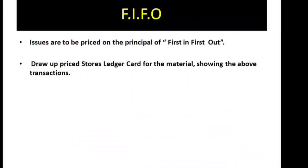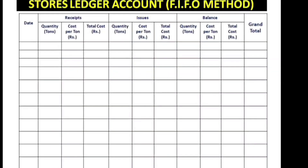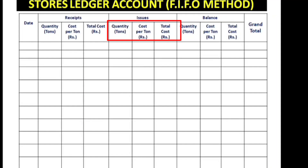Issues are to be priced on the principle of first-in-first-out — that is FIFO. Draw a stores ledger card for the materials showing the above transactions. The ledger card has columns for: Receipts (quantity, cost per unit, total cost), Issues (quantity, cost per unit, total cost), and Balance (quantity, cost per unit, total cost), along with date and particular details.